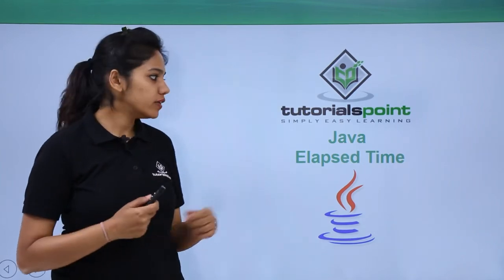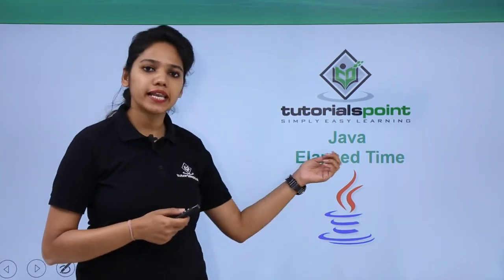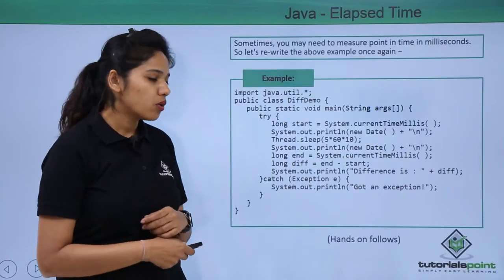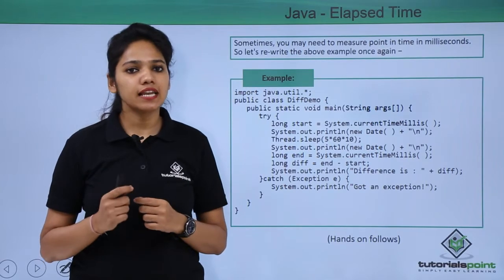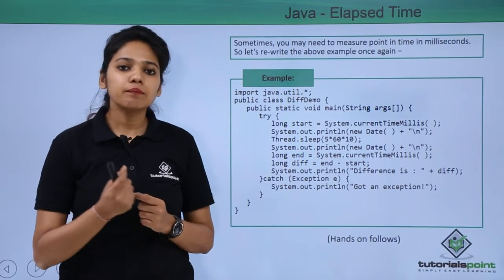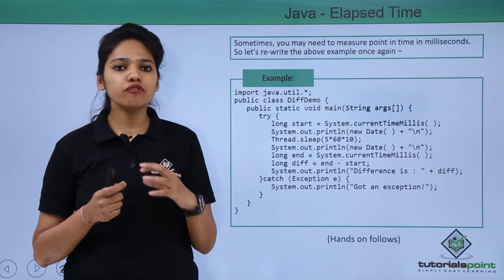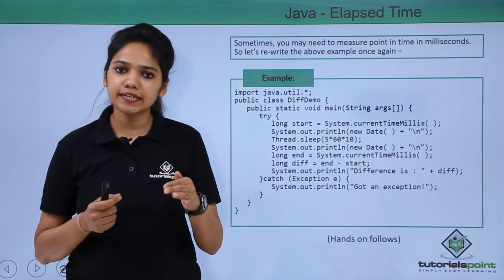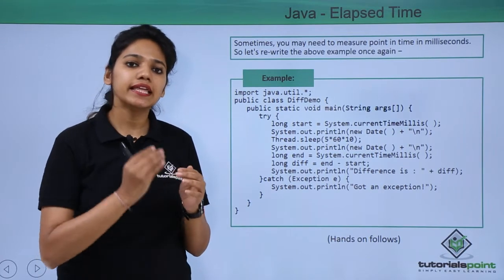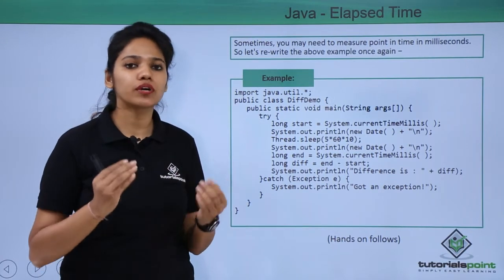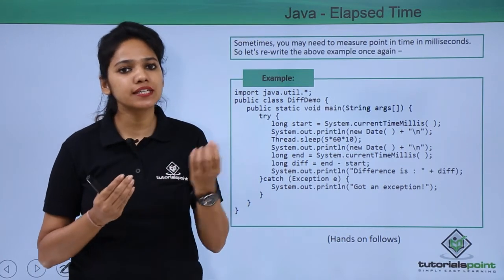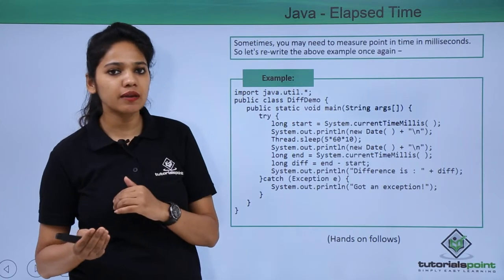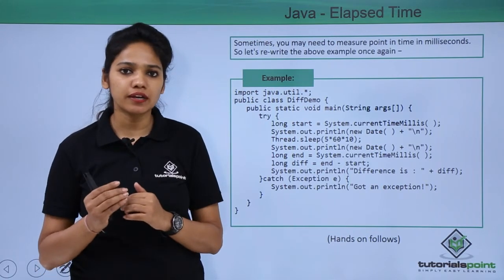Let us now learn about elapsed time. What is this elapsed time? In our previous video, we have seen if you want to display the current date and time and then make the program sleep for certain seconds and display the next date and time, how do you do that?